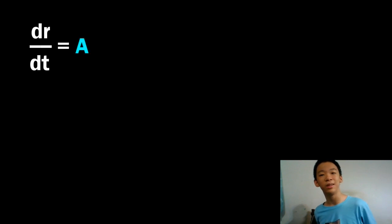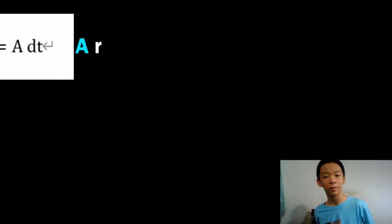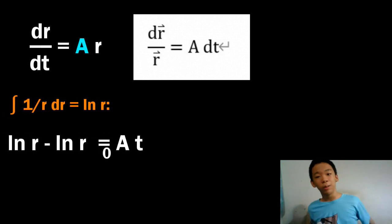Then we're going to treat r of t like a number, and move it to the left, move the dt to the right, and we get dr over r equals a dt.